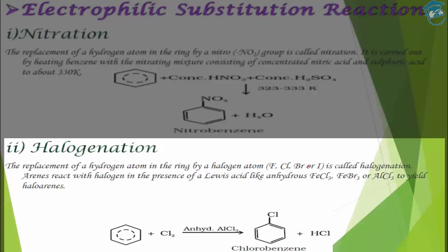Next is halogenation. In halogenation, hydrogen is removed and a halogen atom — such as fluorine, chlorine, bromine, or iodine — is added. This reaction requires a halogen gas and a Lewis acid catalyst such as anhydrous FeCl₃, AlCl₃, or FeBr₃. For example, when chlorine is used, we get chlorobenzene and H is removed in the form of HCl.